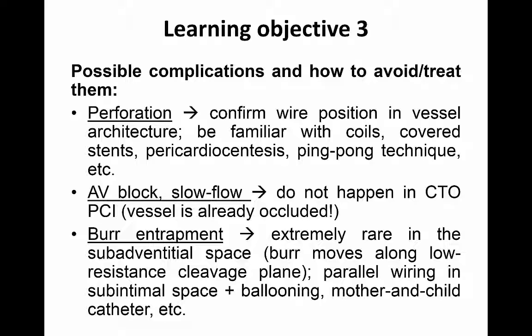An important point is to discuss the possible complications of rotational atherectomy and how to avoid and treat them. The first and most dreaded complication is perforation. We need to confirm wire position in the vessel architecture — this is absolutely mandatory — and we must be familiar with coils, covered-stent implantation, pericardiocentesis, and the ping-pong technique. Other complications of rotational atherectomy are atrioventricular block and slow flow, but these are not concerns in CTO-PCI because the vessel is already occluded and these phenomena are due to embolization of distal material. Another complication — burr entrapment — is expected to be extremely rare in this setting.